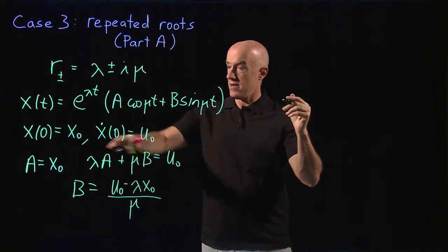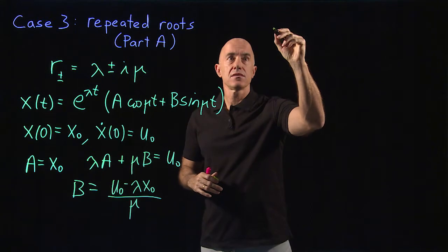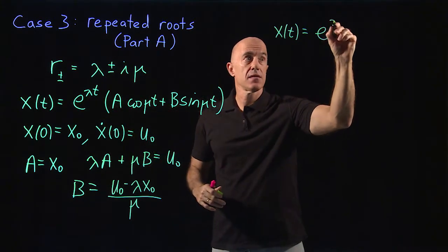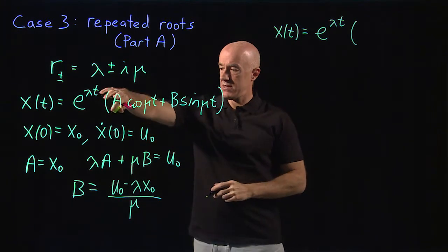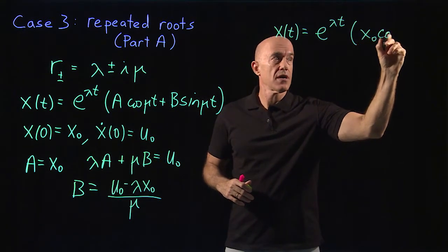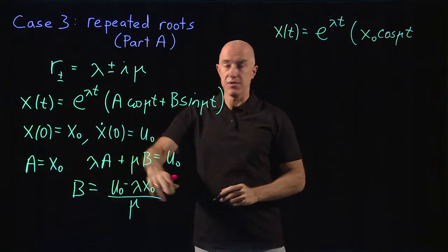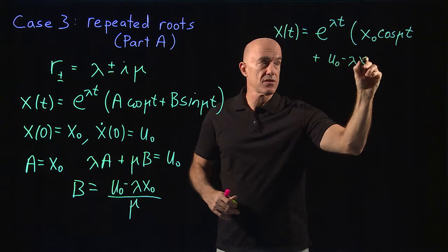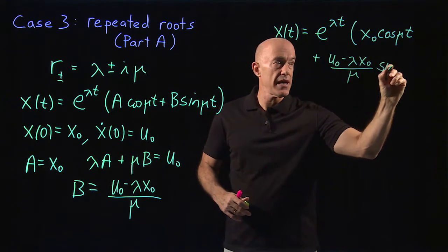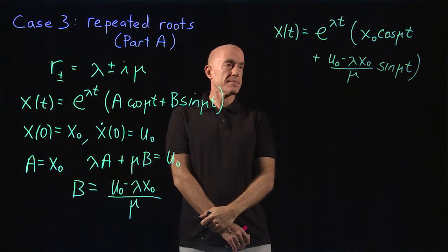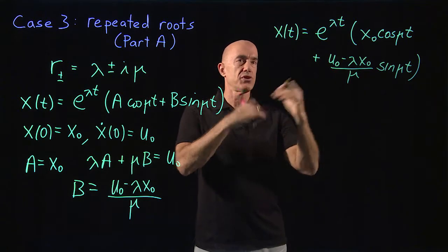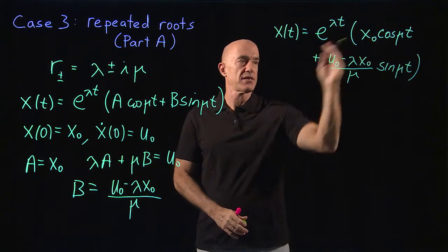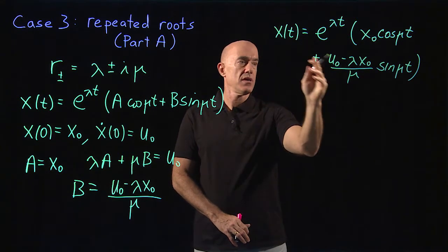Writing out the full solution: x of t equals e to the lambda t times x0 cosine mu t plus, substituting b, u0 minus lambda x0 divided by mu, times sine mu t. That is the solution in the case of two complex conjugate roots of the characteristic equation, where x of 0 equals x0 and x dot of 0 equals u0.